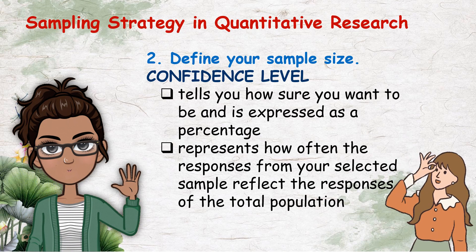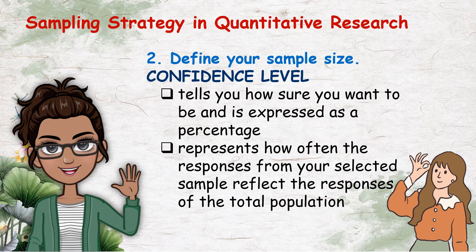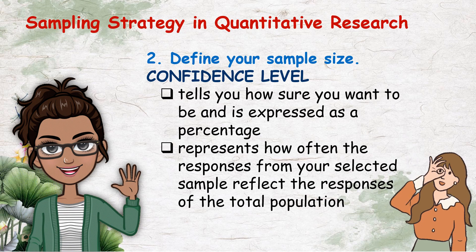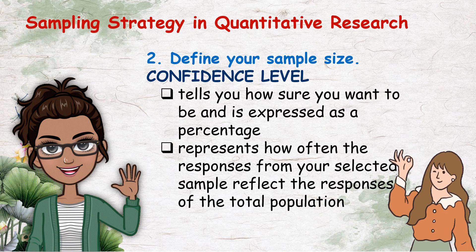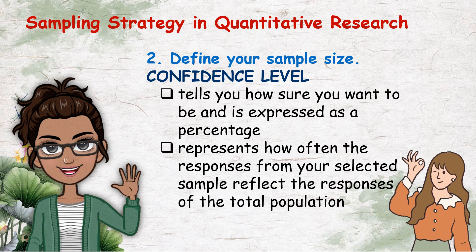The confidence level tells you how sure you want to be and is expressed as a percentage. It represents how often the responses from your selected sample reflect the responses of the total population. Thus, a 95% confidence level means you can be 95% certain. The lower the confidence level, the less certain you will be. There are many formulas used in computing your sample size, and one of those is the Sloven's formula.